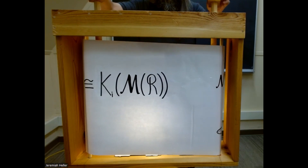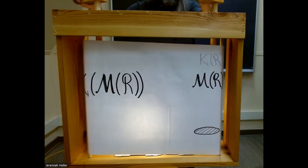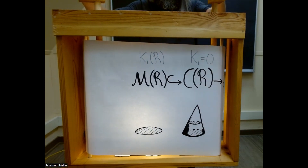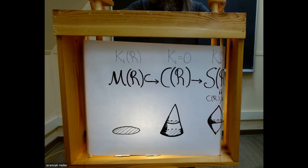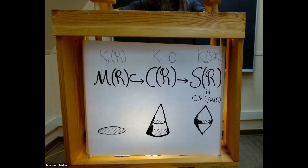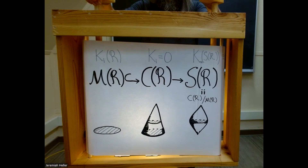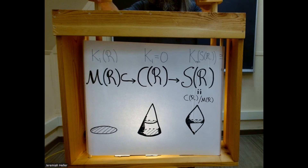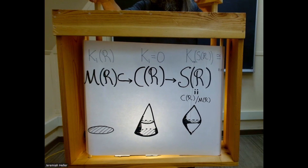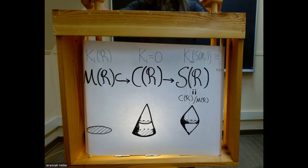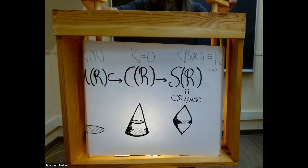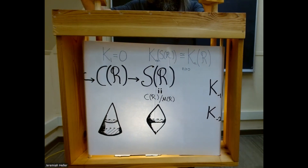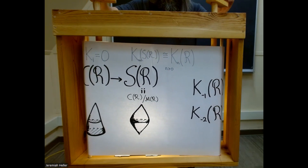Finally, we consider the suspension ring, which is the quotient of the cone by this two-sided ideal. This situation reminds us of the construction of the suspension of a topological space. Since the cone has no K-theory, we can see that the suspension just shifts the degree of the K-groups. But the K-groups have only been defined for natural numbers, and so in fact this lets us define K-theory in negative degrees.